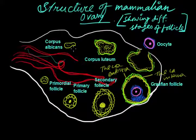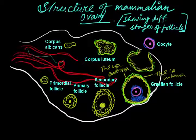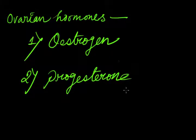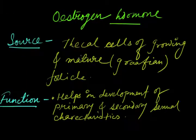And this is the corpus albicans, which is the degenerating form of the corpus luteum. Now the ovarian hormones — two important hormones, estrogen and progesterone, are secreted from different parts of the ovary.